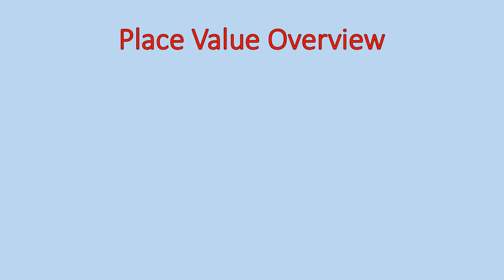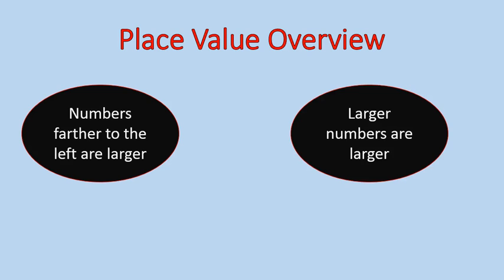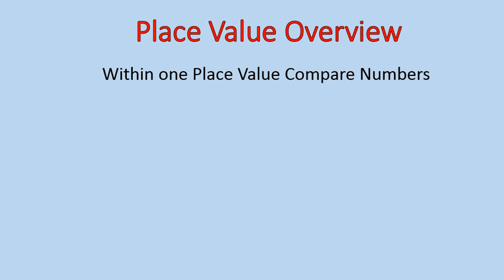Place values. If a number is farther to the left, it is larger than a number farther to the right. Then we have to compare numbers if they're in the same place from left to right, then you look for a bigger number. The larger numbers are larger, and that just sounds oddly simple. So let's go ahead and take a look at place values.